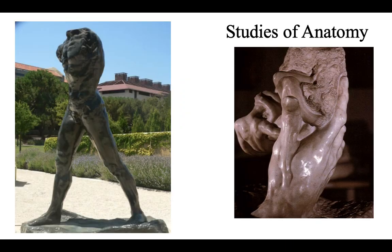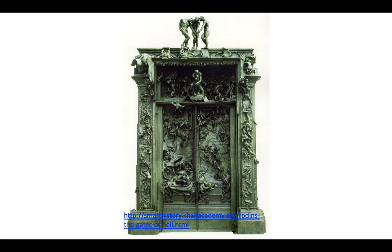Rodin was very much interested in anatomy and did many studies, working mostly in clay. His assistants would make bronze copies of his famous clay works, and he also did some work in marble. We can see studies of torsos, bodies, and hands — evidence of his investment in time mastering his craft. Then if we go to the Gates of Hell, we can notice how complex the series of doors actually is.